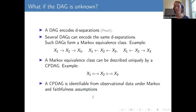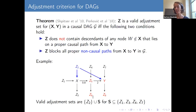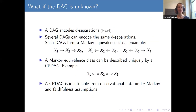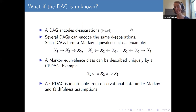Now what do we do if the DAG is unknown? A DAG encodes d-separation relationships corresponding to conditional independencies in the distribution. However, several DAGs can encode the same d-separation relationships and form a Markov equivalence class. For example, with three variables X1, X2, X3, several orientations give the same set of conditional independencies. It is generally hard to distinguish which graph from a Markov equivalence class generated your data.